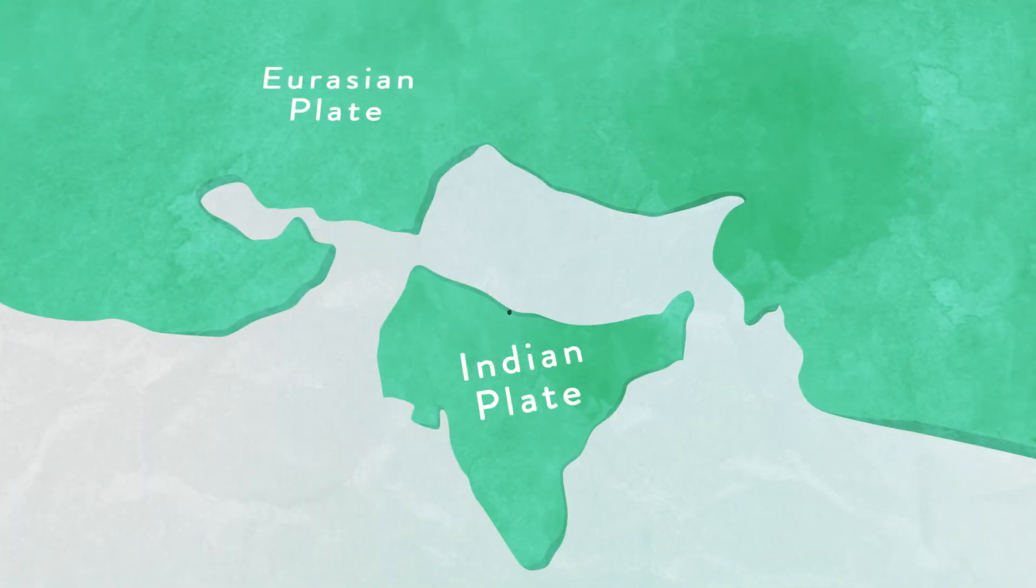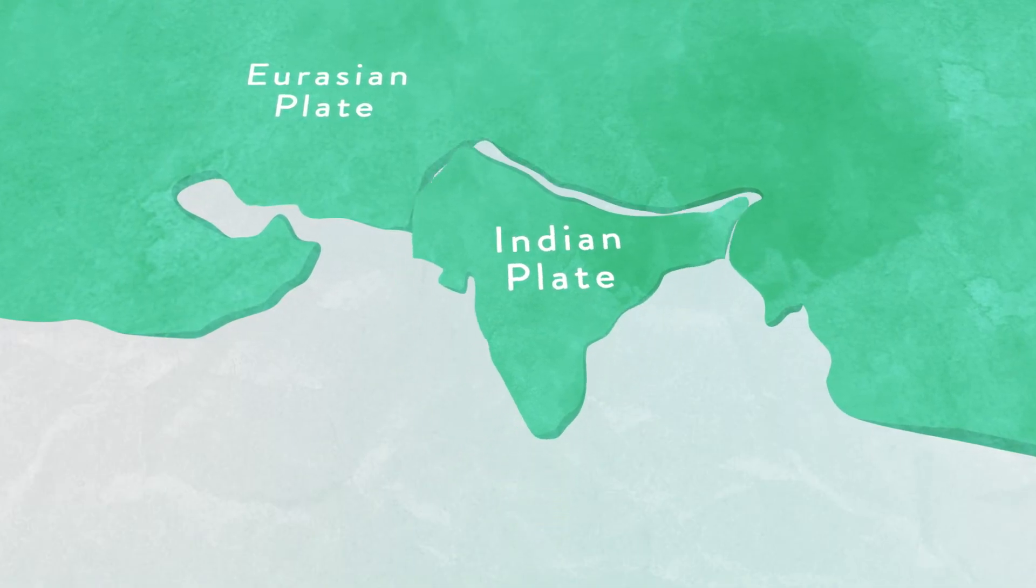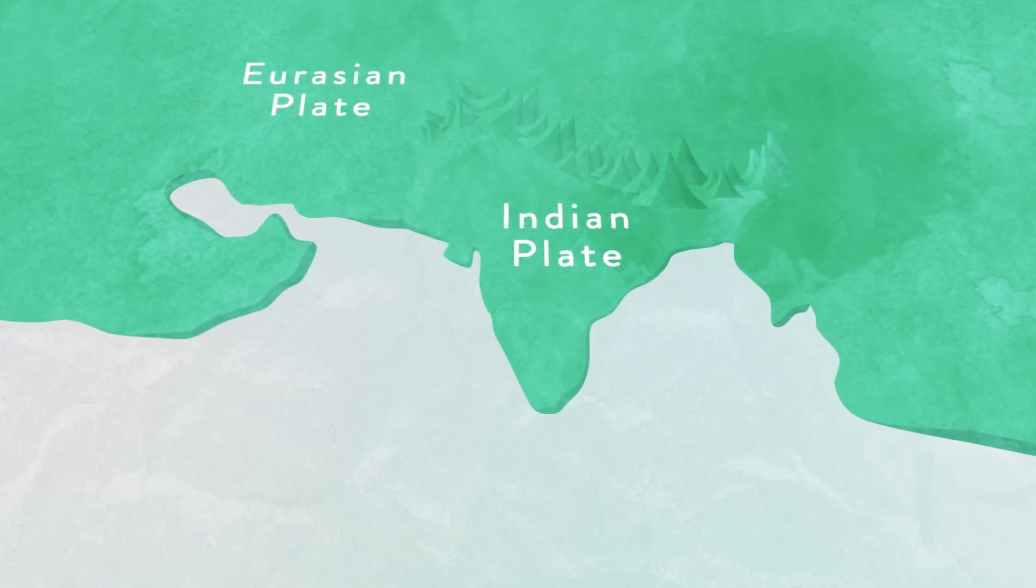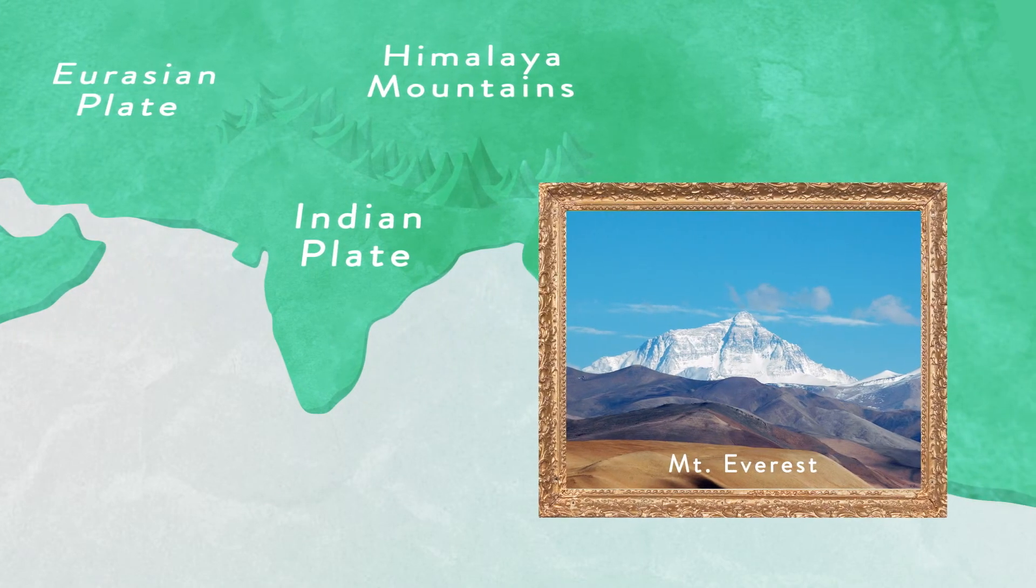For example, as the Indian plate collides with the Eurasian plate, land has nowhere to go but skyward, forming the Himalaya Mountains, including Mount Everest.